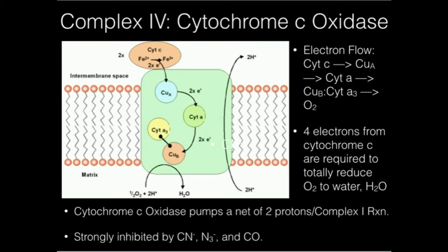One other kind of interesting thing about this enzyme is particularly the copper B down here is strongly inhibited by certain Lewis bases or nucleophiles, which includes cyanide, azide, and carbon monoxide especially.